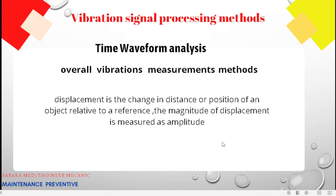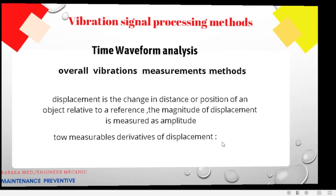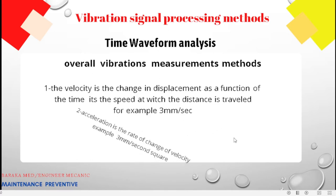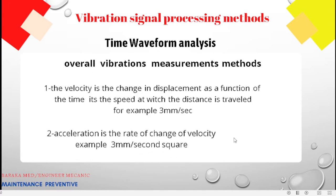Now, the vibration measurement methods. Displacement is the change in distance or position of an object relative to a reference point; its magnitude is measured as amplitude. Velocity is the change in displacement as a function of time — the speed at which distance is traveled, for example 3 mm per second. Acceleration is the direct change of velocity, expressed as mm per second squared.